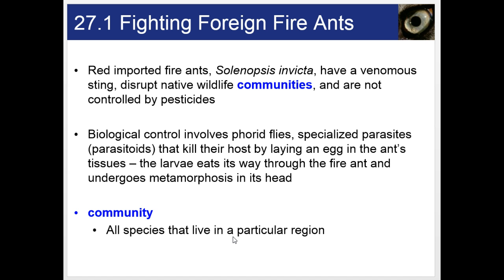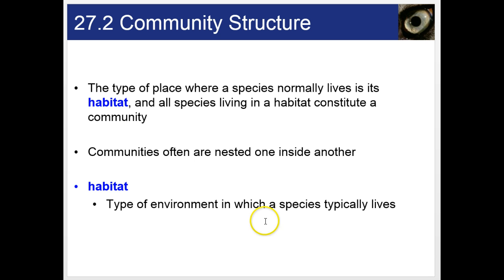A community is all the species that live in a region — different species, as opposed to a population, which is just the same species who are able to interbreed with each other. The type of place where species normally live is a habitat, and all of the species in that habitat constitute the community. They're often nested one inside another.